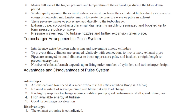In the pulse system arrangement, interference exists between exhausting and scavenging among cylinders. To prevent this, cylinders are grouped with connections to two or more exhaust pipes. The pipes are arranged in small diameter to boost up the pressure pulse and in short straight lengths to prevent energy loss. The number of exhaust branches depends upon firing order, number of cylinders, and turbocharger design.